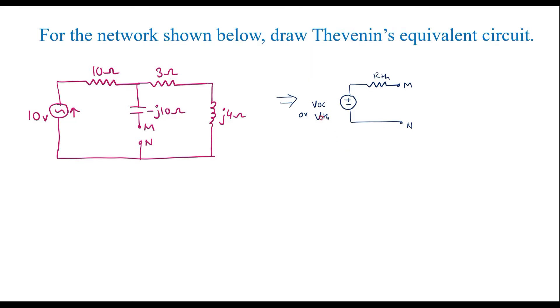Let us see how to calculate VOC and RTH. VOC is open source voltage or Thevenin's voltage, calculated at terminal M and N, keeping M and N open.